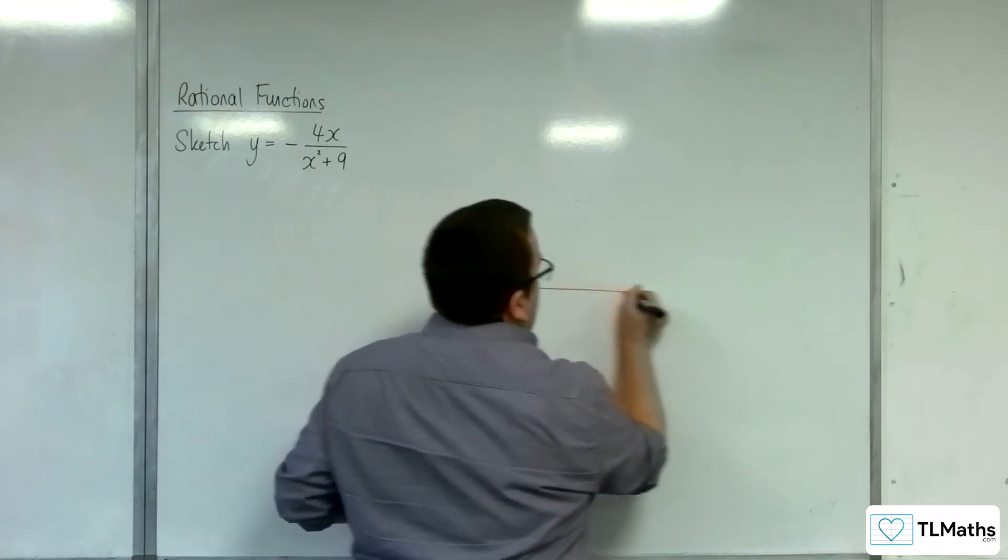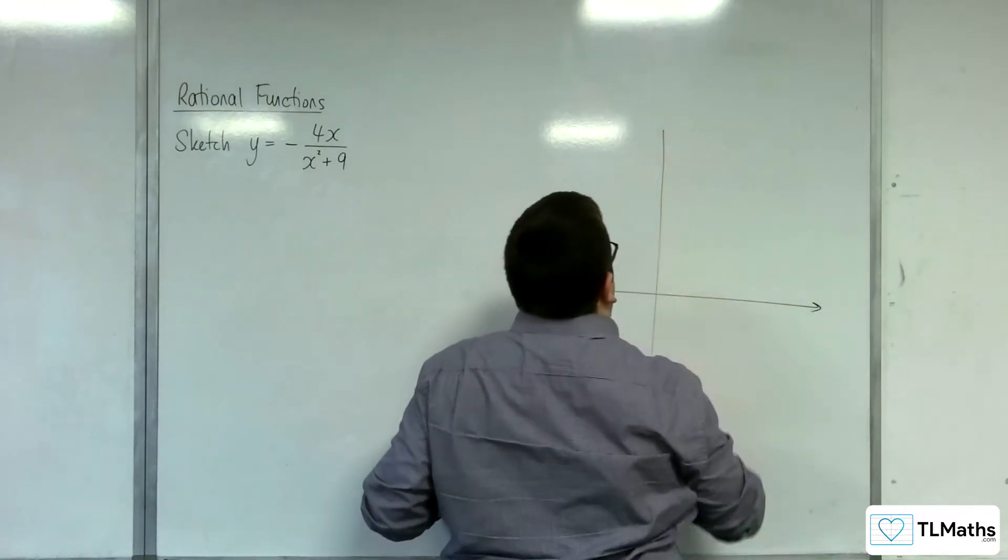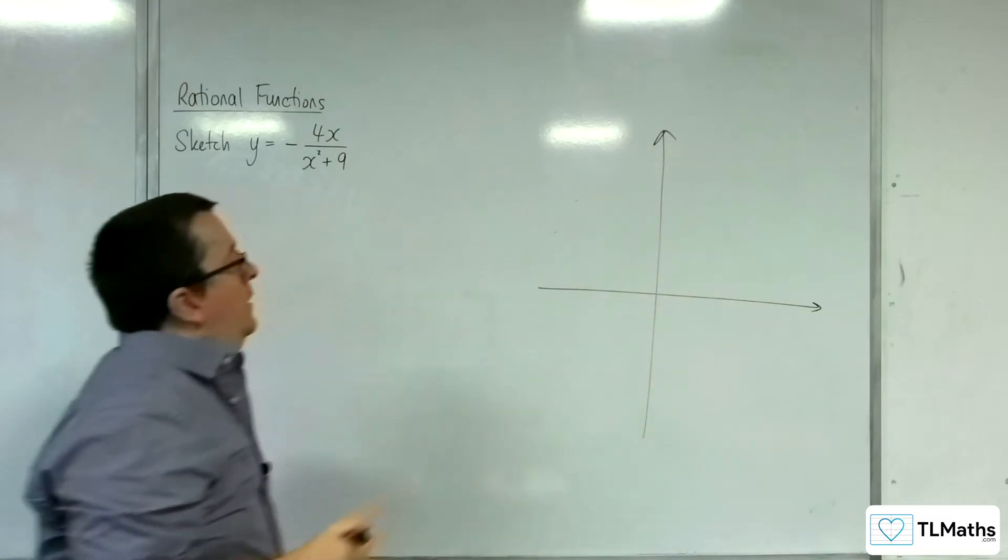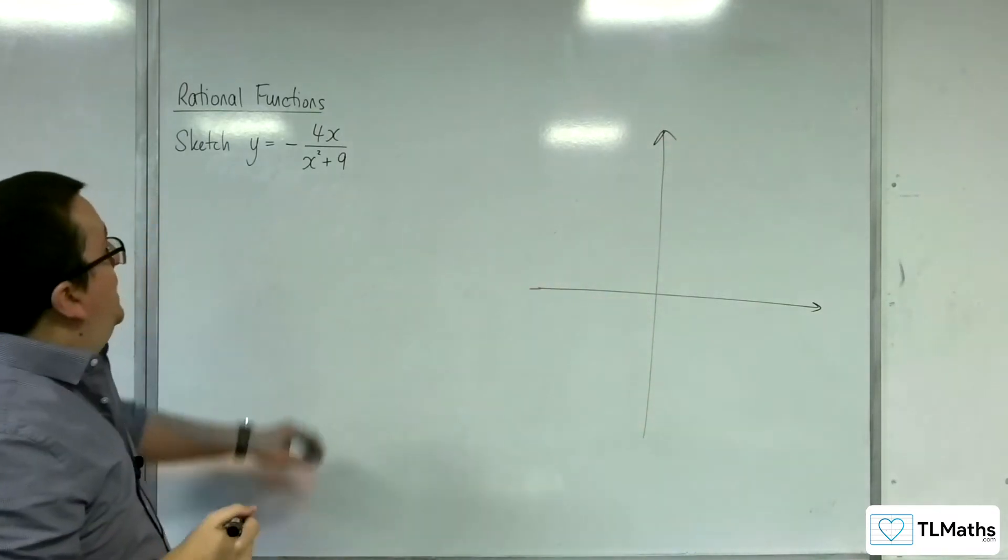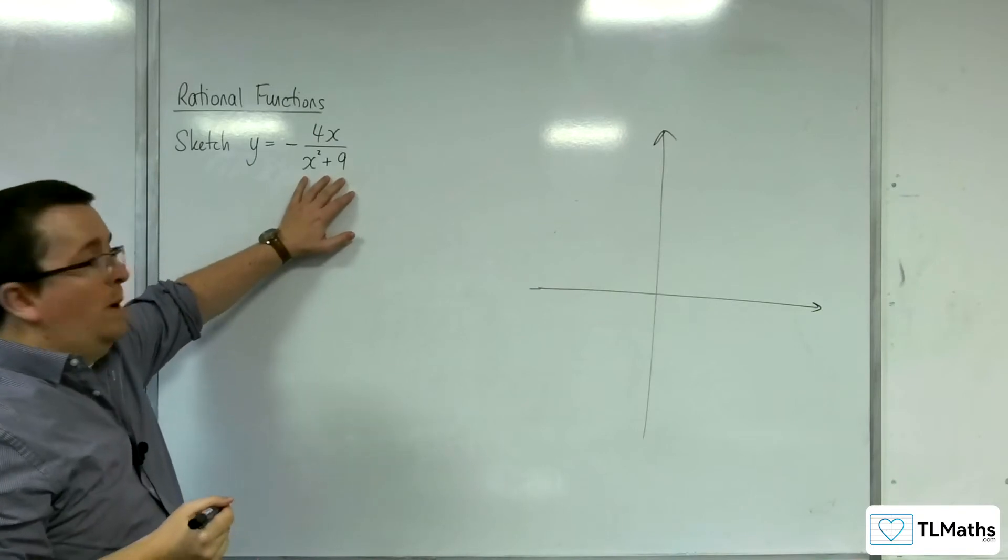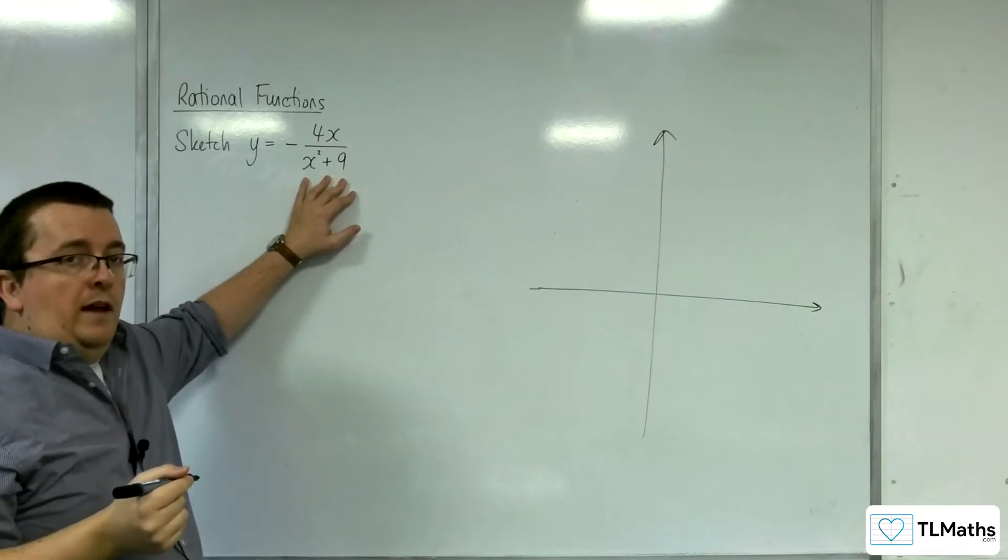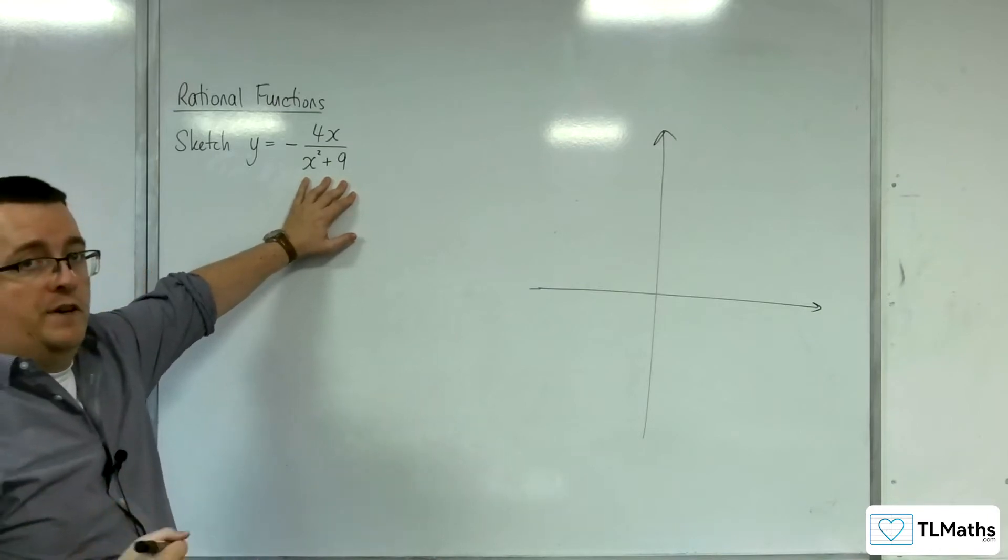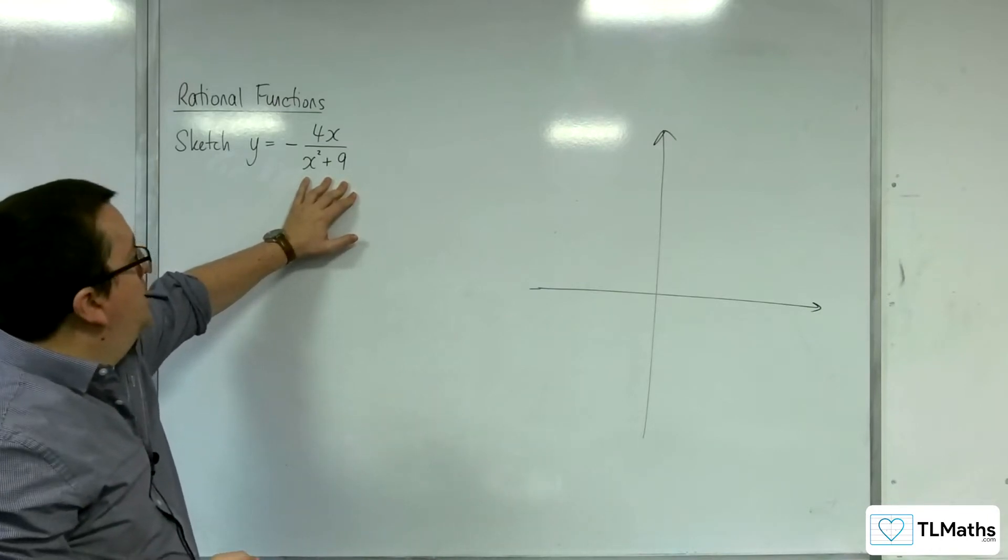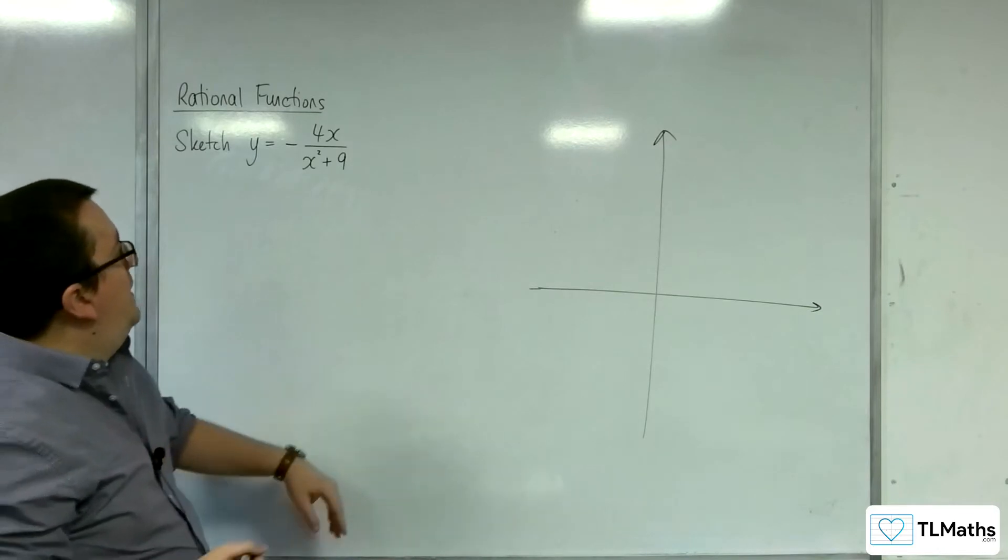So let's go straight into drawing some axes. The first thing we want to do is look for vertical asymptotes. That's when the denominator is 0, but x squared plus 9 is positive for all real values of x. And so there are no vertical asymptotes. So we can scrub that idea.